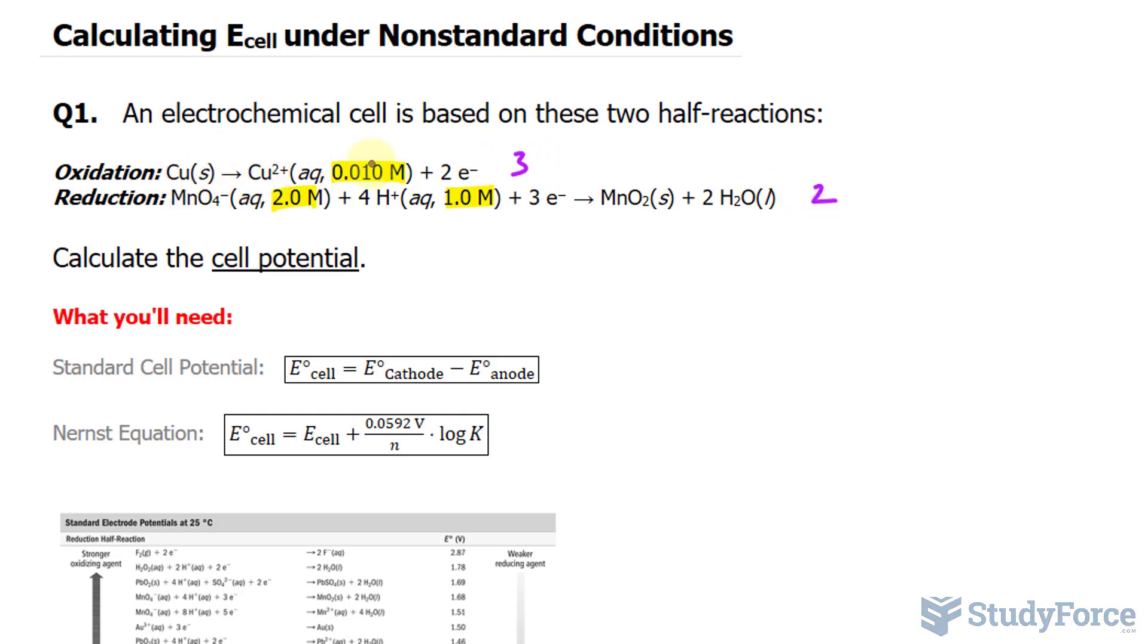If I multiply each of these components by 3, they all get a coefficient of 3 except for this one that gets a coefficient of 6. If I multiply all of these components by 2, we get a coefficient here of 2, 8, 6, 2, and 4. I'll be combining these two half-reactions in a moment.